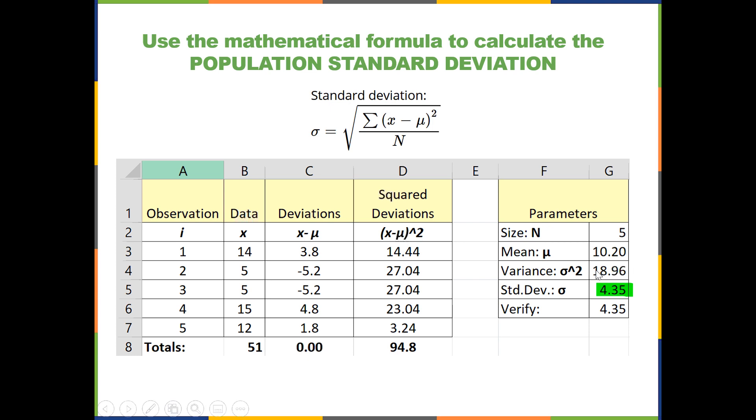And then because we've inflated all of the deviations by squaring them, we bring them back down to scale by taking the square root so that the units of the standard deviation are the same as the units of our original x values. Looking at this with the verification, we have the STDEV.P.